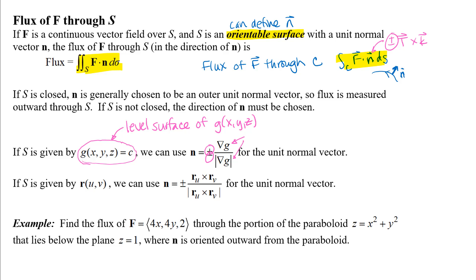We've got an example. We need to decide whether to do this as an ordinary X, Y, Z equation or to parametrize the surface. My strategy generally is to try it with the X, Y, Z equation first, especially if that's what you're given. If it's starting to get kind of ugly, and especially if you have a lot of nice symmetry where polar or spherical coordinates might be helpful, then you might think about writing a parameterization. But let's go ahead and try this one with just X, Y, Z and see what happens.